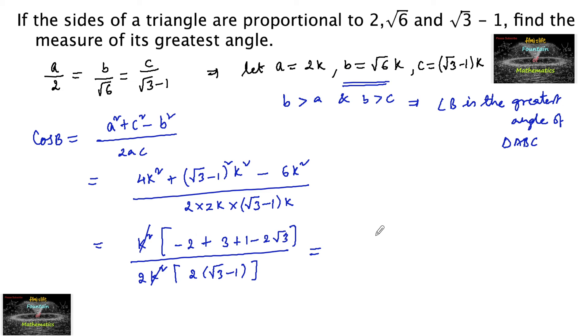So k squared and k squared get cancelled. 3 plus 1 is 4, 4 minus 2 is 2. If I take 2 common: 1 minus root 3 upon 2 times 2 times 2. We can take out minus common, so that becomes 2 and 2 cancel, giving us minus 1 upon 2.